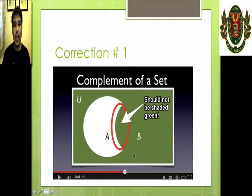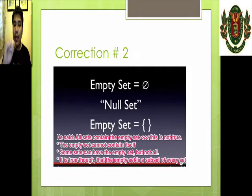The second one is what he said at the last part of the video. He said all sets contain the empty set. This is not true. Because the empty set cannot contain itself. It's stated in the book, right? And it's true that some sets can have the empty set, but not all sets can contain the empty set. For example, the set of integers does not contain the empty set. The set of real numbers does not contain the empty set. It is true, though, that the empty set is a subset of every set. And it's also in the book.